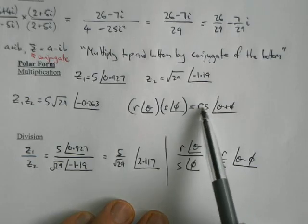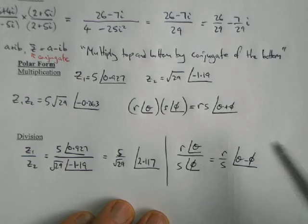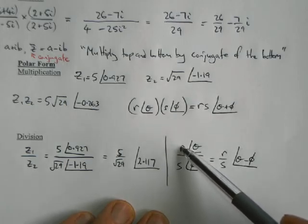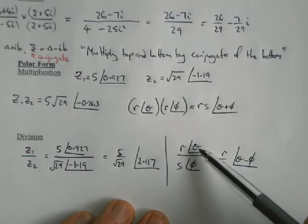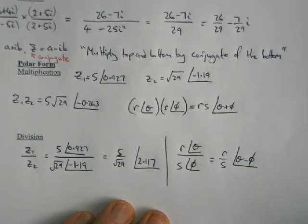It doesn't really matter with multiplication because r times s is the same as s times r, and if you add things it doesn't matter which order. But with division it does matter. It has to be r divided by s, and then the top one minus the bottom one to make it work out.